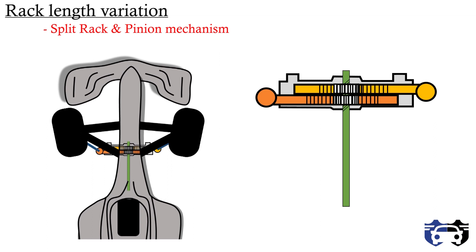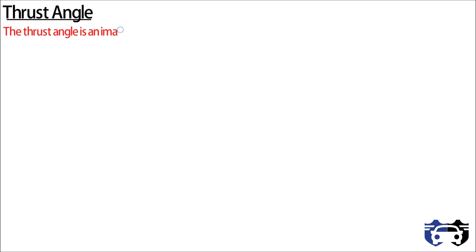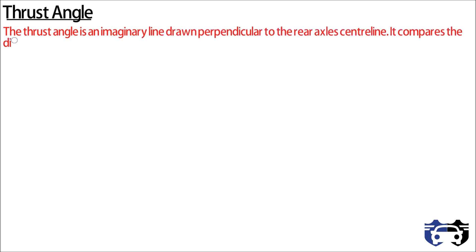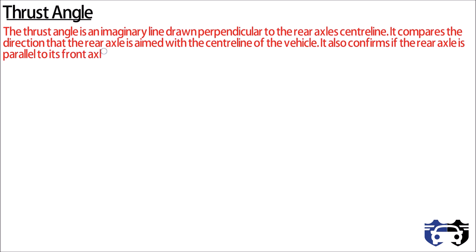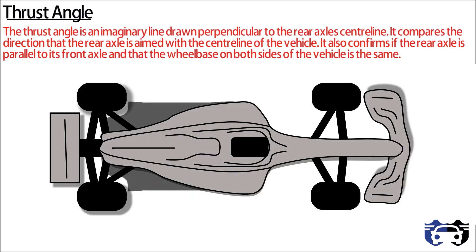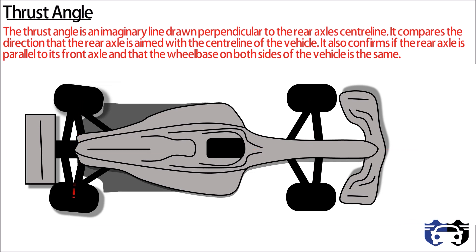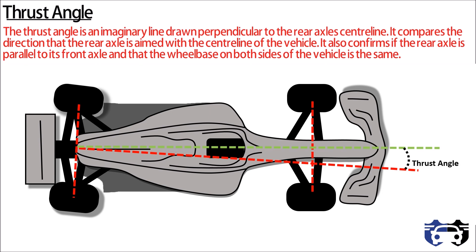Now let's understand thrust angle. Thrust angle is the imaginary line drawn perpendicular to the rear axle center line. It compares the direction the rear axle is aimed with the center line of the vehicle, confirming that the rear axle is parallel to the front axle and that the wheelbase on both sides is equal. If the rear axle center line is parallel to the front axle center line, the imaginary line from the rear axle center intersects the center of the front axle — giving zero thrust angle. If the rear axle is not parallel to the front axle, the imaginary line makes an angle with the vehicle center line, producing a thrust angle.